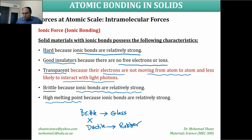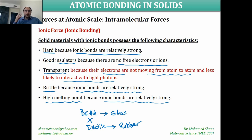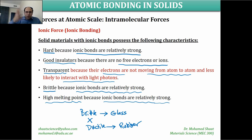Their melting temperature is also relatively high, because the ionic bond is strong. To convert the material from solid to liquid, a very high amount of heat energy is required to weaken the ionic bond. These properties — hard, strong, insulating, transparent, brittle, and high melting point — are all because of the ionic bonding between metal and non-metal atoms in ceramic materials.